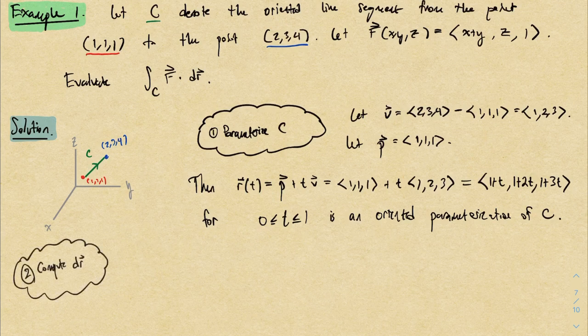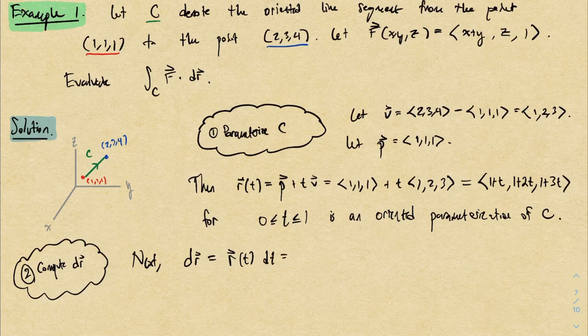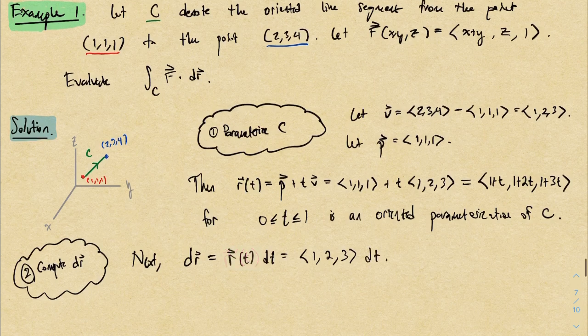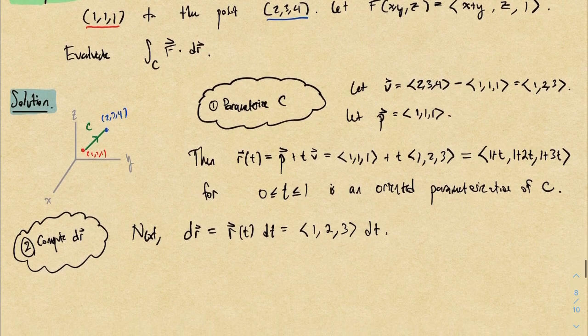Next we compute the differential dr = r'(t) dt. The derivative r'(t) is just the direction vector (1,2,3), so dr = (1,2,3) dt. Now we're ready to plug this in and turn everything into a single-variable integral.